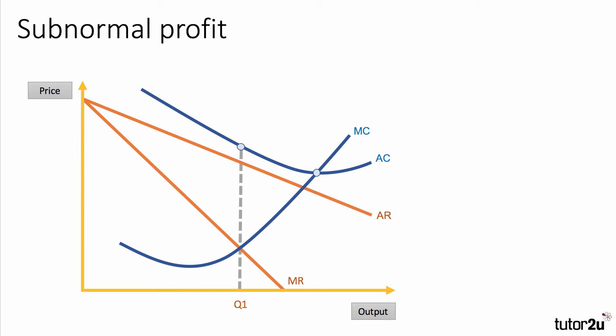How do we show subnormal profit and economic loss? Here's the diagram: the average revenue curve (AR) lies wholly below the average cost curve. There's nowhere this firm can actually make a normal profit because price is always less than average cost. If the business chooses to maximize profit at Q1, the cost per unit is C1 and the price they can charge is P1.